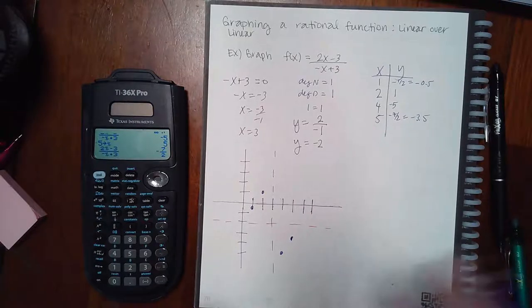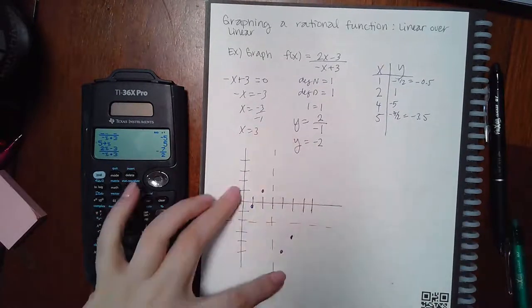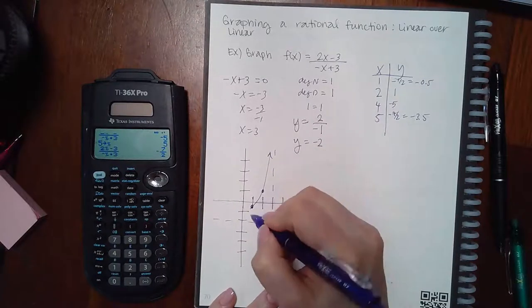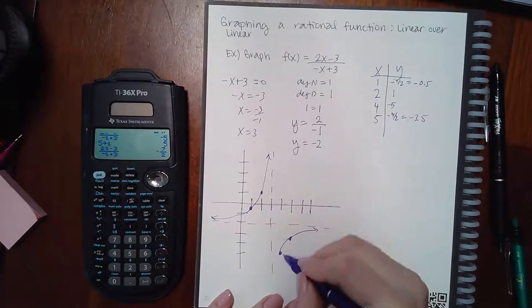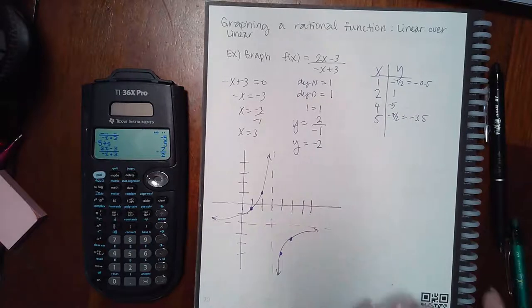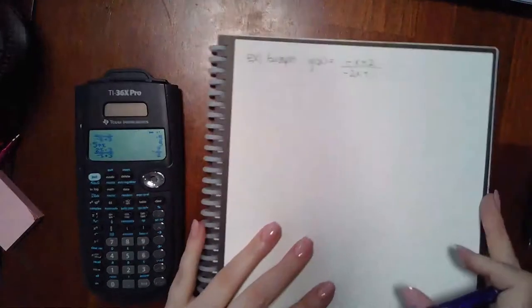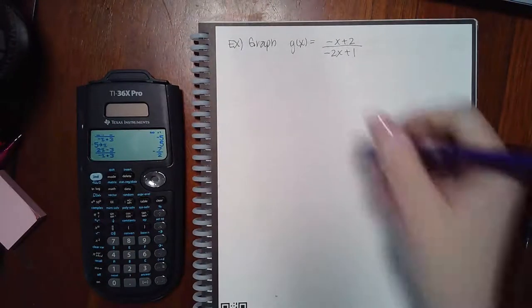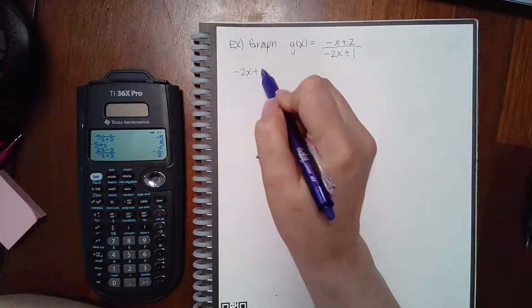Graph the asymptotes and the two points on each side — the graphing software will draw the curve for you. But here I'm going to go ahead and connect the dots since I don't have a graphing button.